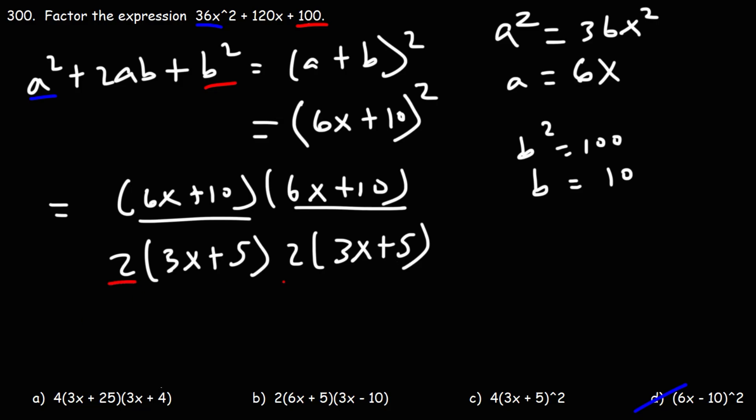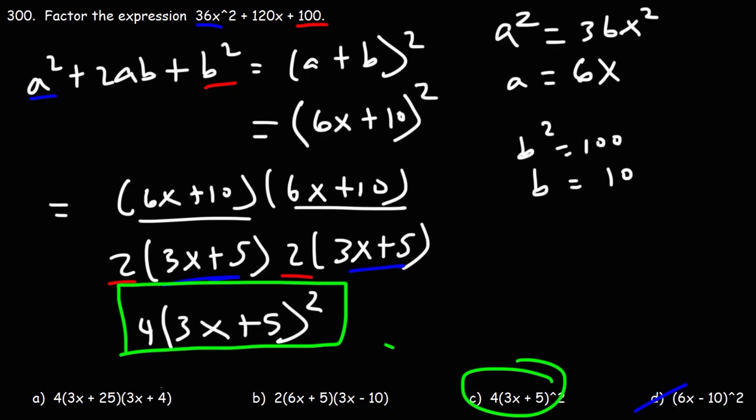Now, we can multiply these. 2 times 2 is 4. And because these are like expressions, we can write them as 3x plus 5 squared, because we have 2 of them. Therefore, this is the answer, and we have that listed as answer choice C.